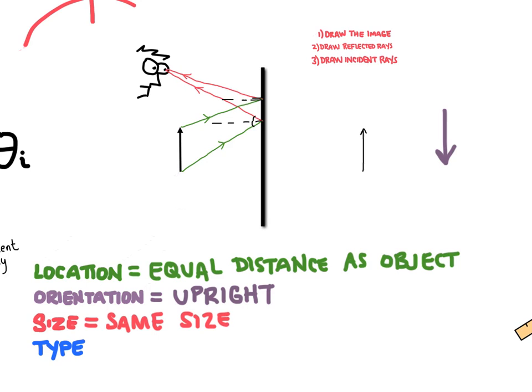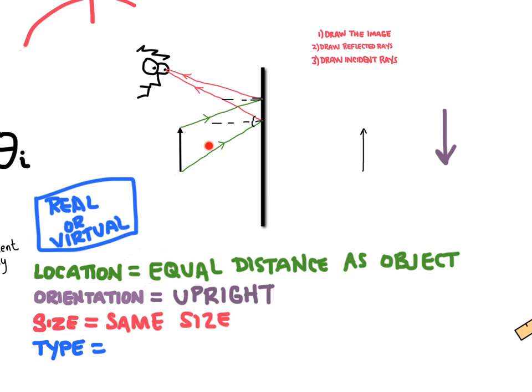The last one is type. There are two types of images: real or virtual. The side where the light actually exists — where you can see the incident and reflected rays — is called the real side. The other side is called the virtual side because light does not actually travel there. This image is existing in a space that doesn't actually exist, so we call it a virtual image. For plain mirrors — these flat ones — we're always going to produce a virtual image. And with that, we've described the image, covering reflection and how to draw ray diagrams.